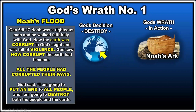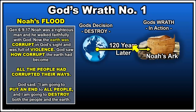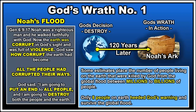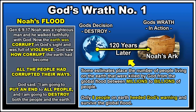God decided to destroy all the evil people and the earth. It took 120 years — Noah preached for 120 years, and out of all those people, only his family — only eight people on earth — heeded God's warning and survived the global flood. There were probably millions, possibly billions, of people on the earth when the flood encompassed it and drowned everyone. This was God's wrath at work.